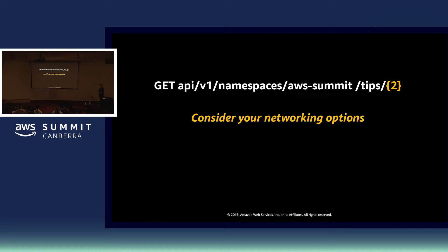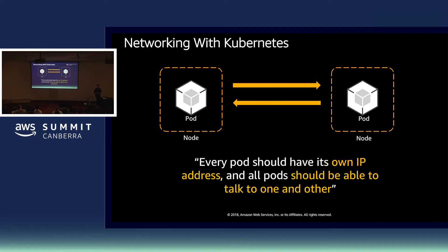The next top tip on your journey is to really think about your networking options. One of the core design principles that Kubernetes lays out is that every pod — and for the purposes of our conversation today, we can think of a pod as a container — has its own IP address, and all the pods in that cluster are able to talk to one another. There are a few ways that we can achieve that specific networking model.